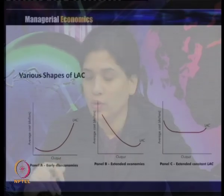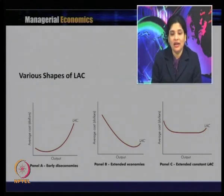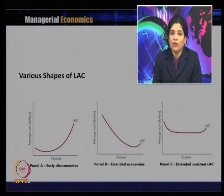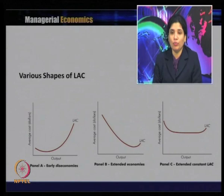We will now discuss a few more types of long run average cost curves that do not follow the regular U-shape, and examine the reasons behind these irregular shapes. In the first graph, average cost is on the left axis and output on the X-axis. This is a case of early diseconomies, because the long run average cost curve increases much before reaching the minimum cost or midpoint of the curve.